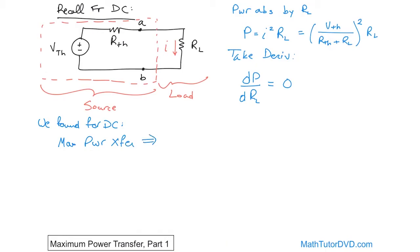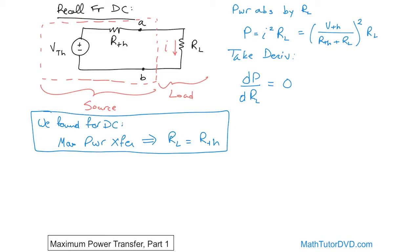For DC, maximum power transfer occurs when the load resistance is equal to the Thevenin resistance. What that means is: when you have some source with some source resistance, and any circuit can be boiled down to a Thevenin equivalent with some load hanging off, you want to choose the load resistance to be exactly equal to the internal resistance of the source. When you do that, you get a maximum amount of watts transferred to the load. If you start deviating — increasing or decreasing the load resistance on either side — you get fewer watts transferred.